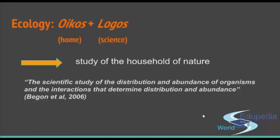This one, for example, is from Wikipedia, and it says: the scientific study of the distribution and abundance of organisms and the interactions that determine distribution and abundance. It seems complicated and robust, but what it actually says is the same thing as before — it explains the organisms, where they live, how they influence the surrounding, and vice versa, how the surrounding influences the organism.